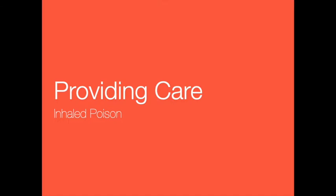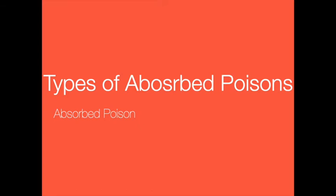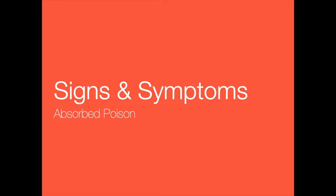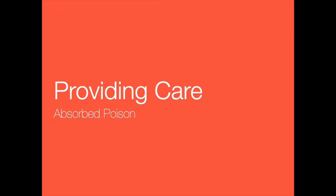An absorbed poison enters through the skin or mucous membranes in the eyes, nose, and mouth. Absorbed poisons come from plants as well as chemicals and medications. Millions of people each year suffer irritating effects after touching poisonous plants such as poison ivy, poison oak, and poison sumac. Other absorbed poisons include dry and wet chemicals such as those used in flea collars and yard and garden products. Some topical medications or transdermal patches can also be absorbed through the skin. Signs and symptoms include traces of liquid, powder, or chemical on the skin; burned, irritated, red, or swollen skin; blisters; rash; or itchy skin.